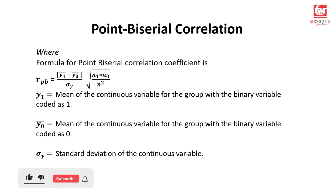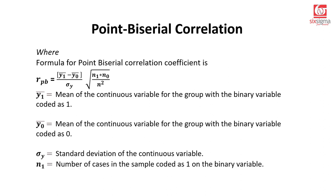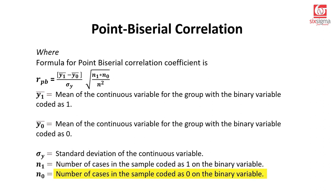We then calculate the standard deviation of the continuous variable, taking both categories together — so this is the overall continuous variable for which you calculate the standard deviation. Then n1 is the number of cases in the sample coded as 1 on the dichotomous variable, n0 is the number of cases coded as 0, and n is the total sample size, which is n1 plus n0.